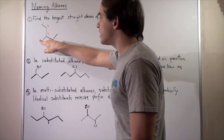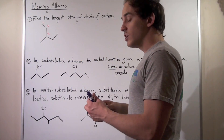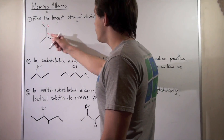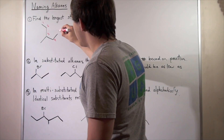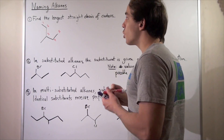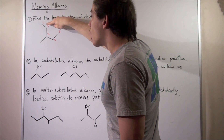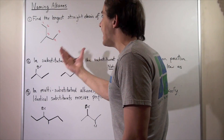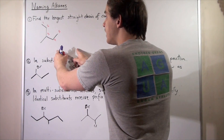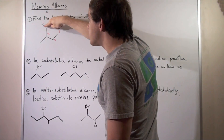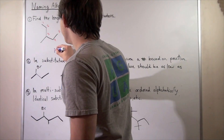If we choose this way, we get four. If we choose this way, we get five. So we go this way — five is longer. This is the longest straight chain of carbons, called the carbon backbone. We name the alkane based on this carbon backbone, so we'll have a pentane. Pent means five, -ane means it's an alkane.